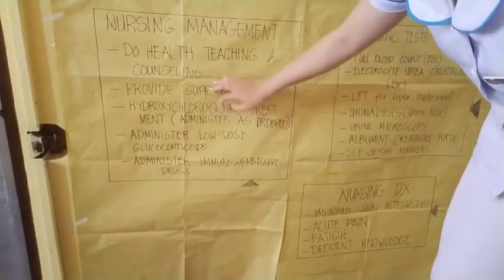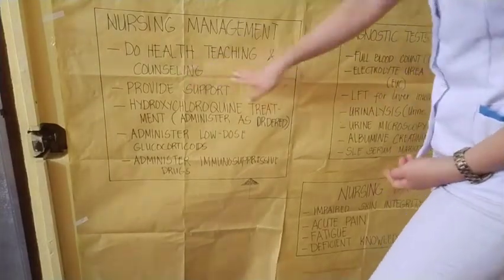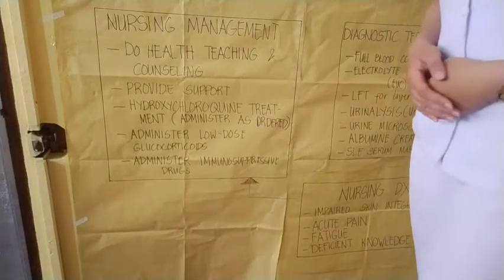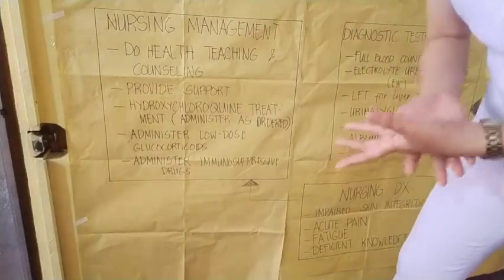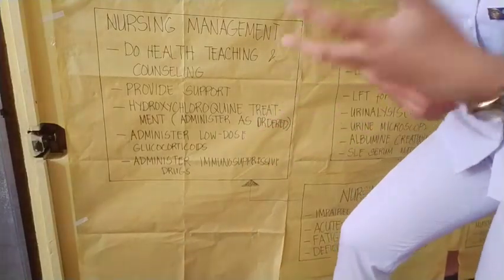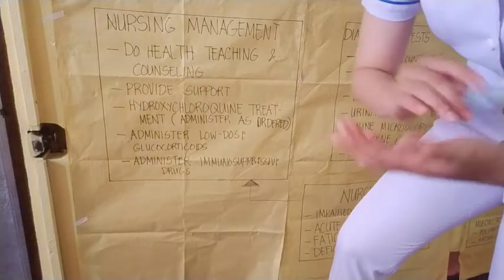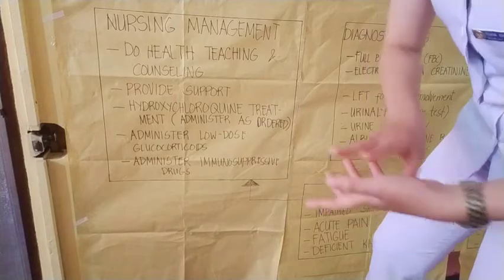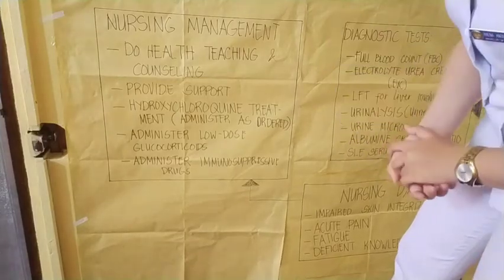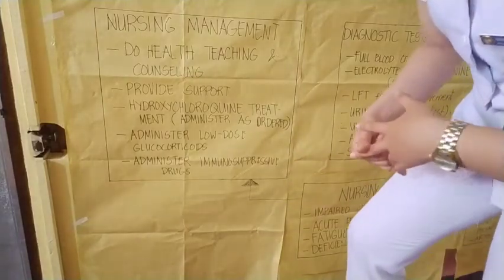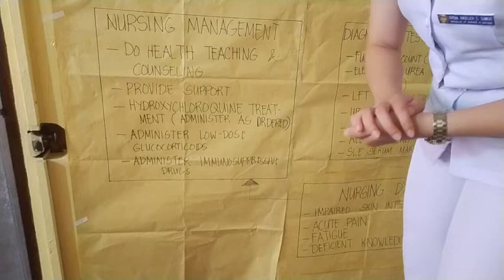For nursing management, first is health teaching and counseling. Educate the patient about what SLE is, its signs and symptoms, possible complications if management is not followed, and what must be avoided. For example, the patient must avoid sun exposure, smoke exposure, and drugs that increase oxidative stress damage. The environmental risk factors mentioned earlier must be avoided to prevent worsening of the disease.